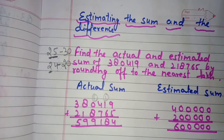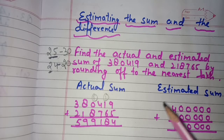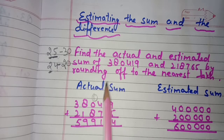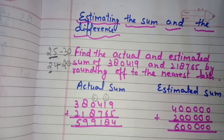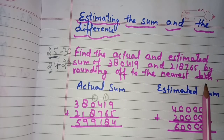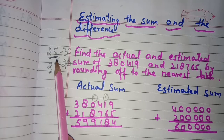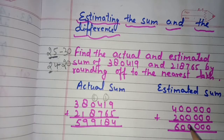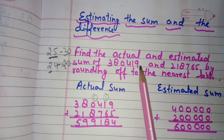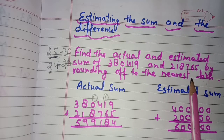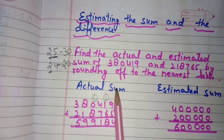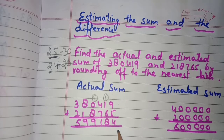Now let me give you an example of estimating the sum and estimating the difference. Find the actual and estimated sum of 3,80,419 and 2,18,765 by rounding off to the nearest lakh. We had given a small number example earlier but now we are doing estimation of six or seven digit numbers. Since we have to round off to the nearest lakh, that is the lakhs place.